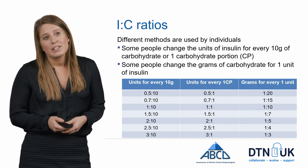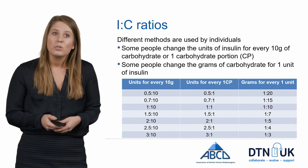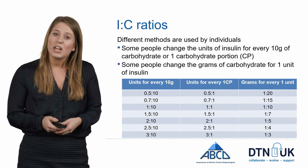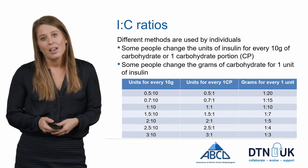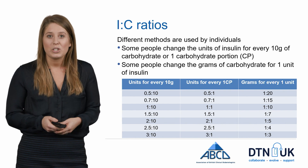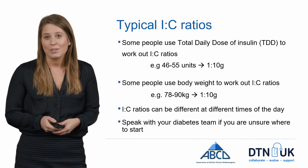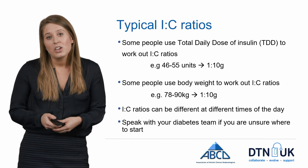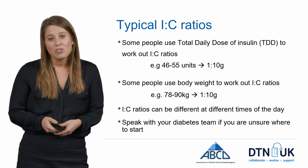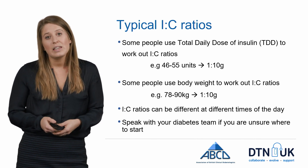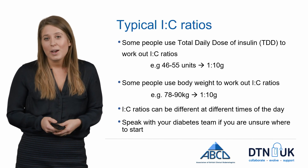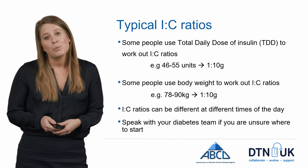Different methods are used for carbohydrate ratios. Some people change the units of insulin for every 10 grams of carbohydrate or one carbohydrate portion, whereas others change the grams of carbohydrate per one unit of quick-acting insulin. The table below shows some common insulin to carbohydrate ratios and the different ways these can be recorded. If you're new to carbohydrate counting, you can work out a starting ratio using total daily dose of insulin or body weight — but this is just a starting guide and ratios may need reviewing, as insulin to carbohydrate ratios can differ at different times of the day. If unsure, speak to your diabetes team.